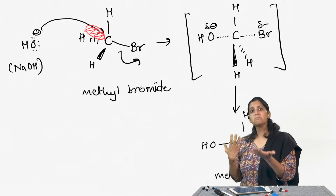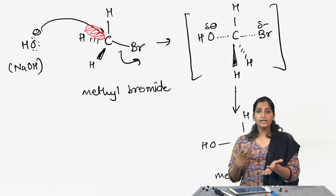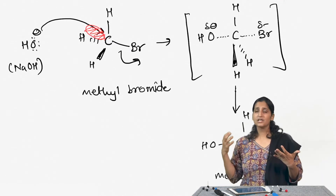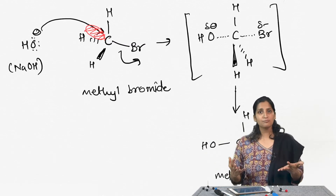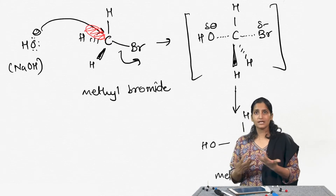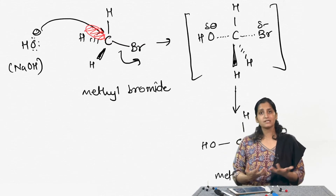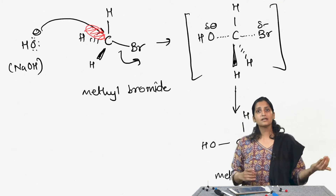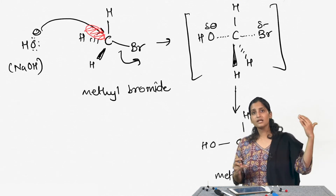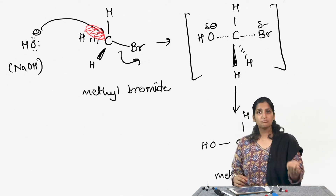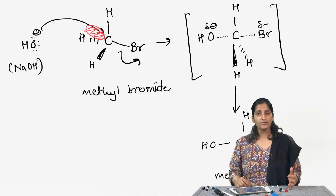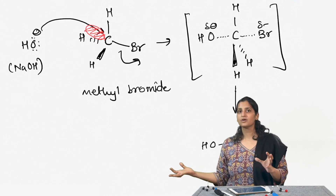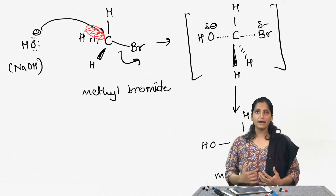The second reason the structure facilitates a backside attack is that bromine is a very bulky group. When the hydroxide wants to attack, instead of attacking from the same side as bromine and facing a lot of steric hindrance, it prefers attacking from the backside to reach that partially positive carbon effectively and facilitate the leaving of the bromide ion.